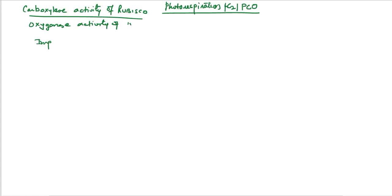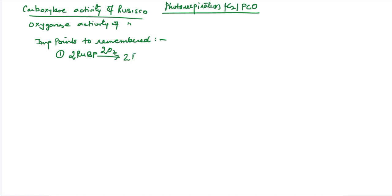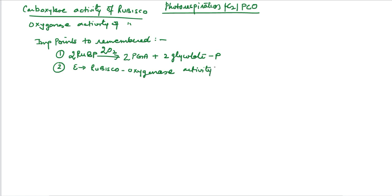Important points to be remembered pertaining to photorespiration. First: ribulose bisphosphate (RuBP) — two molecules are oxidized into two molecules of phosphoglyceric acid and two molecules of phosphoglycolate. Second point: the enzyme involved is RuBisCO with oxygenase activity, when oxygen concentration is greater than CO2 concentration.